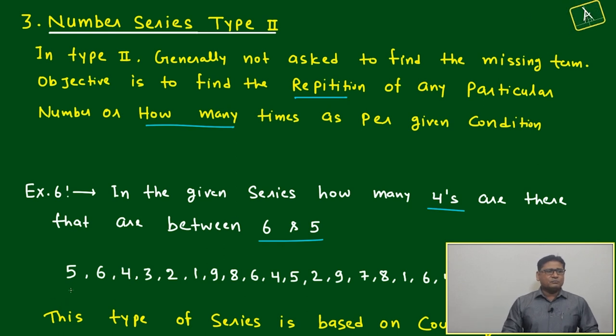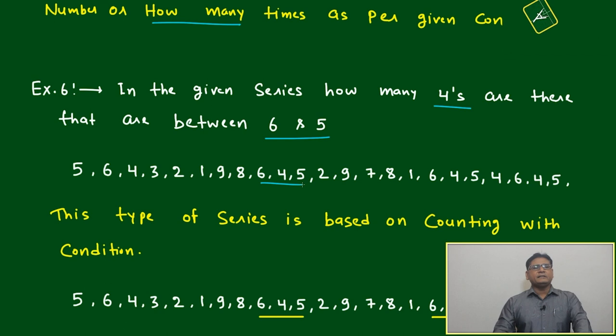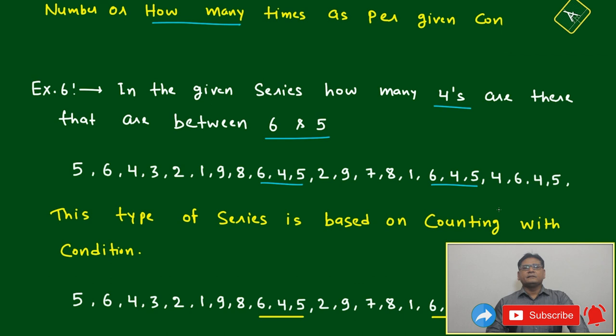Let's observe: five, six, four - this four is not between six and five. Next four, this is perfectly fine, it is between six and five. Next four, this is also fine. And the next four, this is also fine.